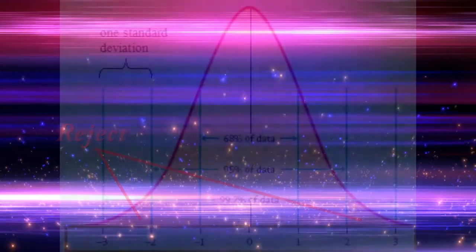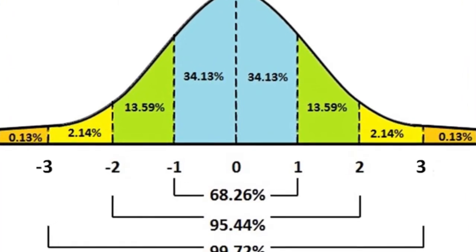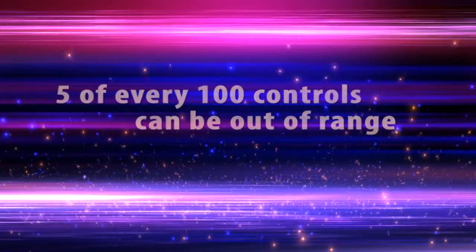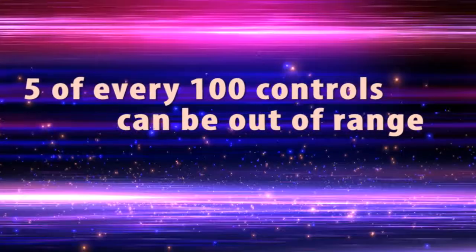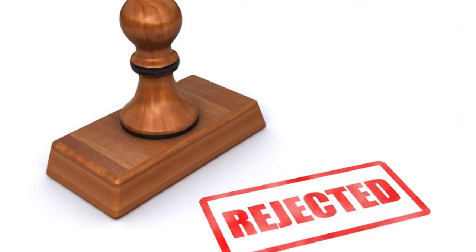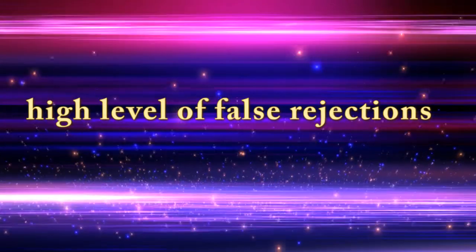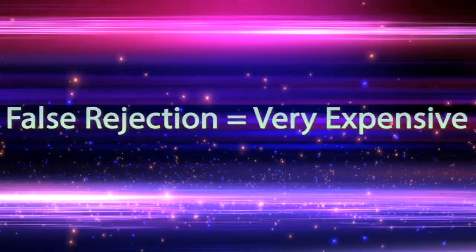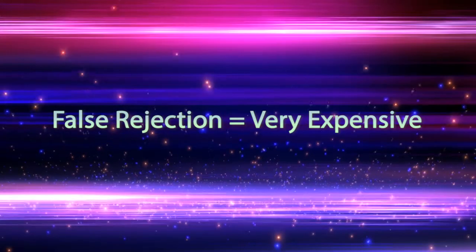With the Gaussian curve approach, any value exceeding 2 SD must be rejected. However, only 95% of values fall within the 2 SD range, meaning 5 of every 100 controls can be out of range and rejected as false rejections. This gives a high level of false rejections or false alarms, which can become very expensive for the laboratory because rejected tests have to be repeated.